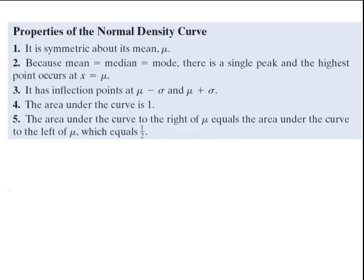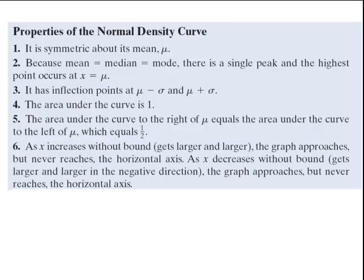A half plus a half makes one. As x increases without bound, the graph approaches but never reaches the horizontal axis. As x decreases without bound, the graph approaches but never reaches the horizontal axis. So we say the tails never touch the x-axis.